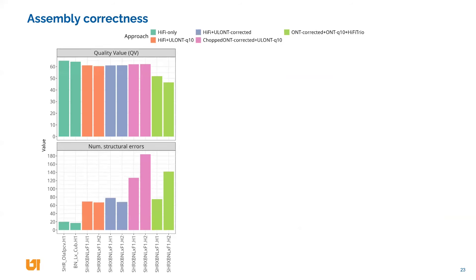Checking correctness via quality value — we check k-mers from the reads against k-mers from the assembly; you don't want the assembly to have k-mers not present in the reads. Quality is roughly similar, a little bit worse if you add Nanopore reads. For Nanopore-only assemblies there are clear problems. We also checked structural errors — if you add Nanopore reads, errors increase in number.